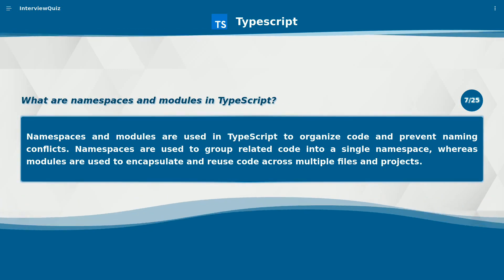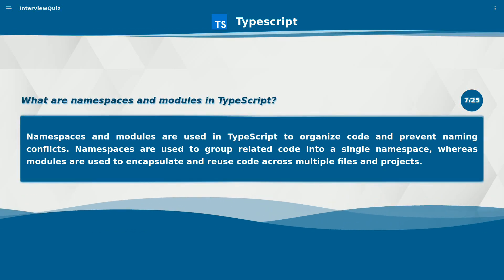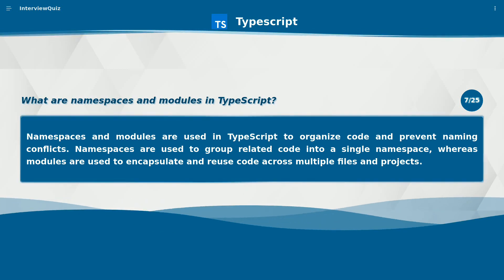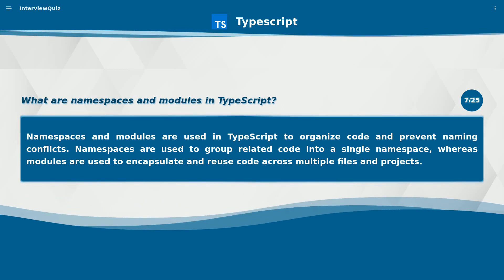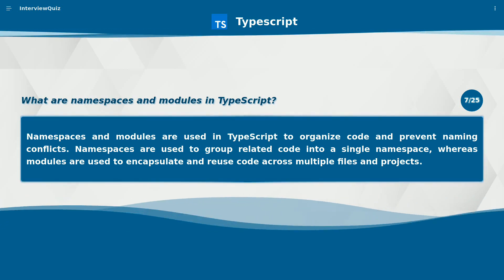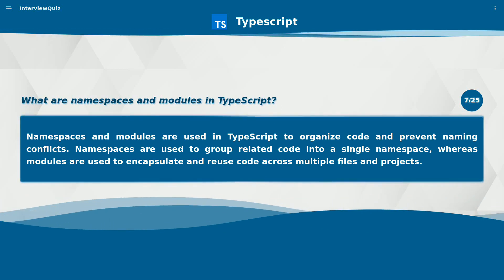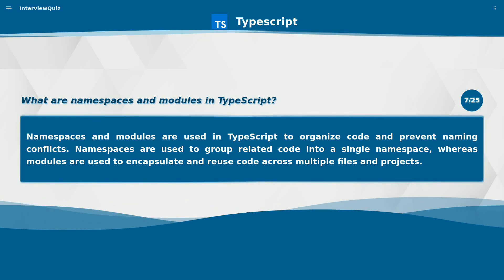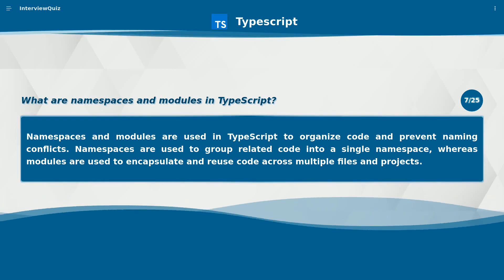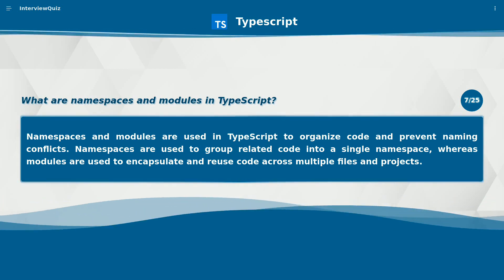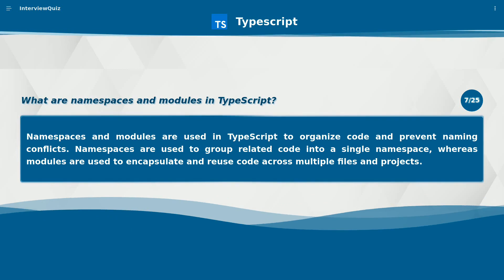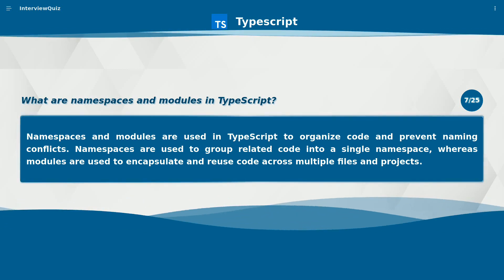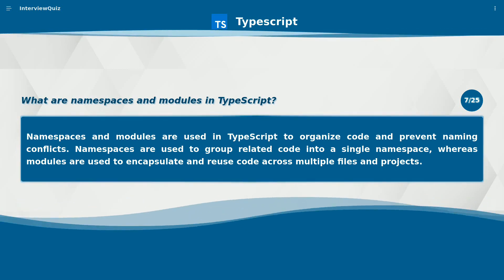What are namespaces and modules in TypeScript? Namespaces and modules are used in TypeScript to organize code and prevent naming conflicts. Namespaces are used to group related code into a single namespace, whereas modules are used to encapsulate and reuse code across multiple files and projects.